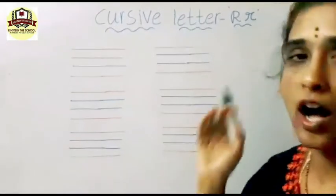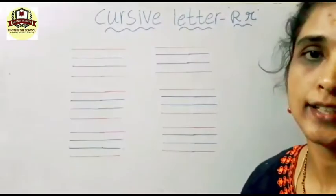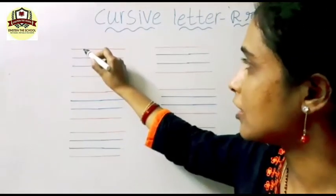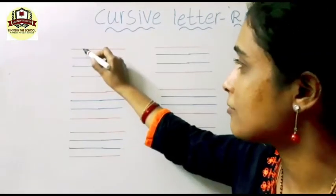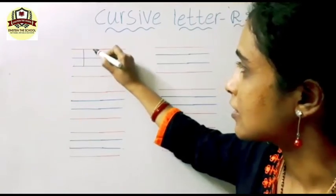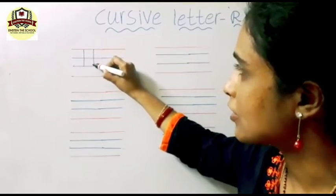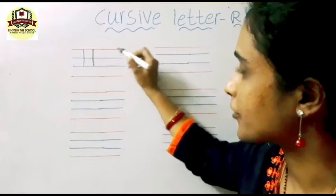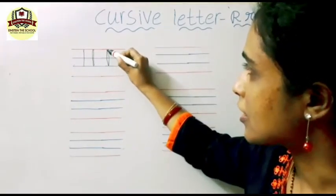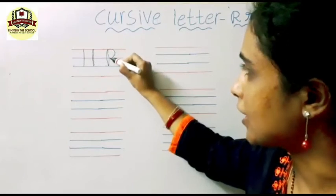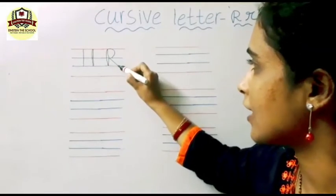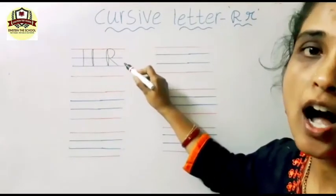For the capital cursive R, you should write the letter P first. As we already done with the letter P — first write the standing line, then side to that write one more line from down to up. Now write the letter P. After writing the letter P, from here write the slanting line. This is the capital cursive R.